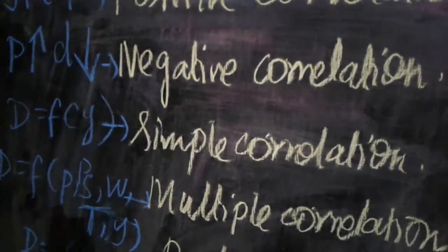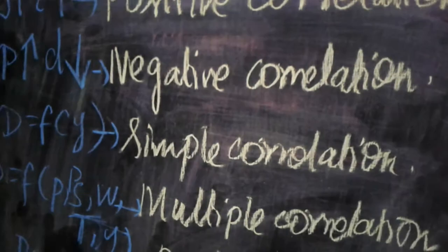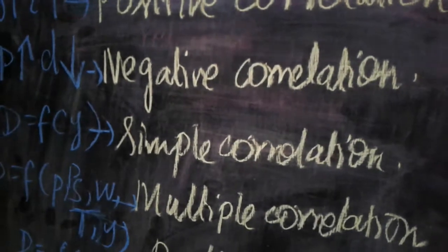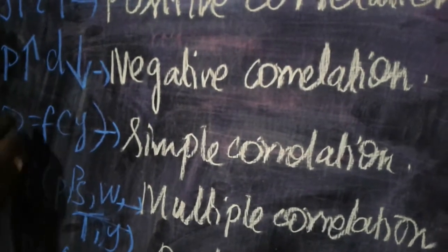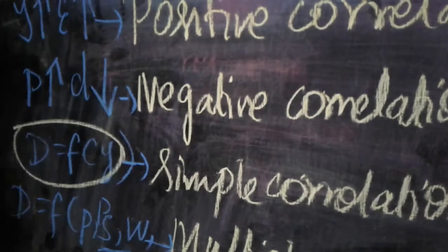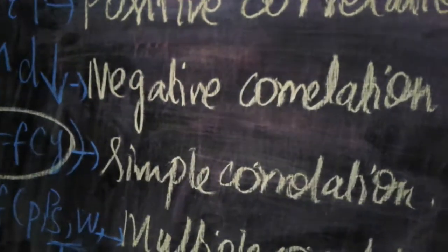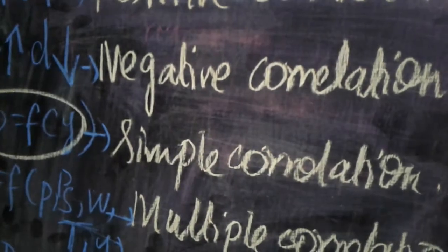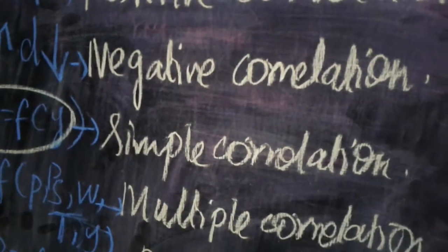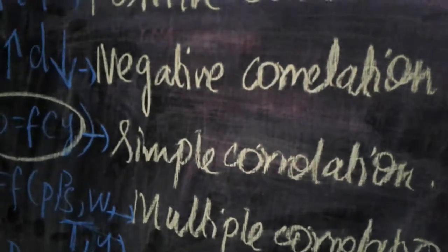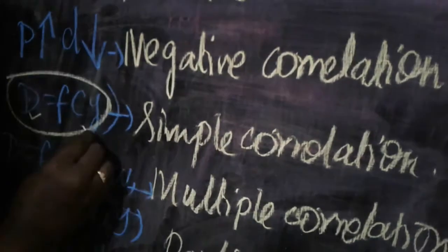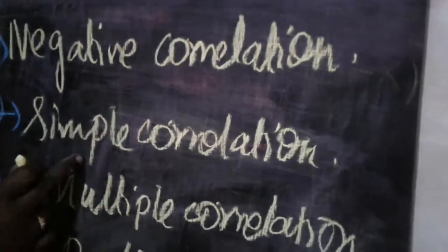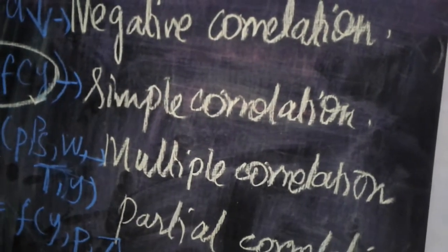Simple correlation means only two variables are taken into account — we concentrate only on those two. For example, D = f(I), where D means demand, f means function, and I means income. When income increases, demand also increases; when income falls, demand also falls. We concentrate only on these two variables — this is the best example of simple correlation.